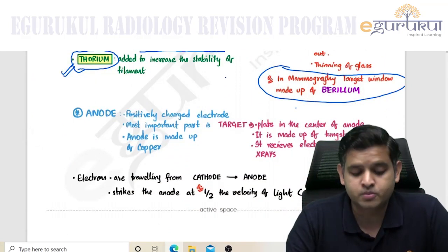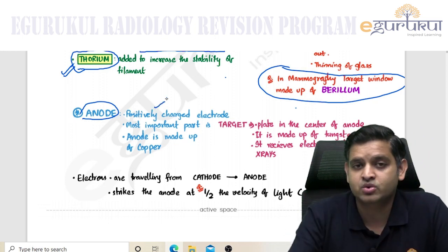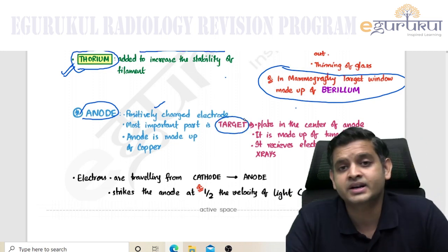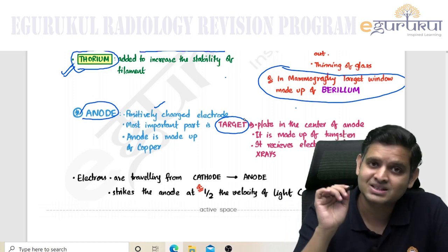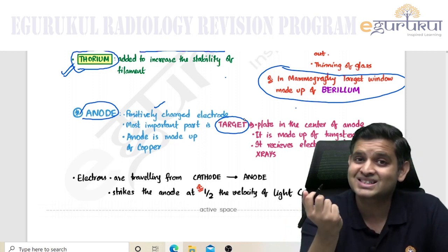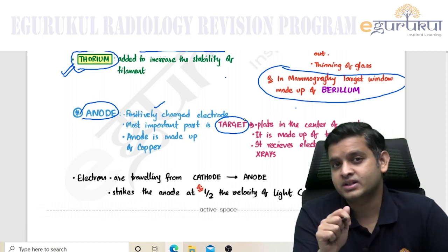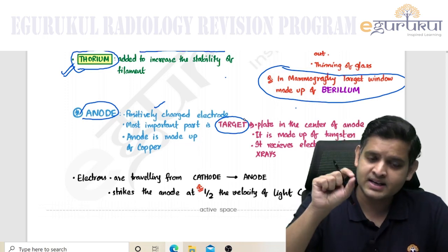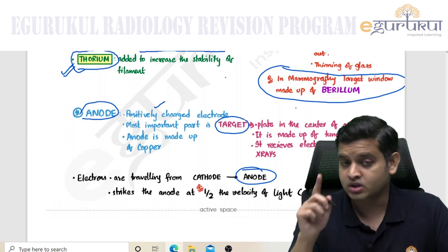The last part of the x-ray tube is the anode, which is a positively charged electrode. The most important part of the anode is the target, which is also made up of tungsten. The purpose of the target is to receive electrons and generate x-rays. X-rays are generated at the anode or target, but the reaction here is not thermionic emission.